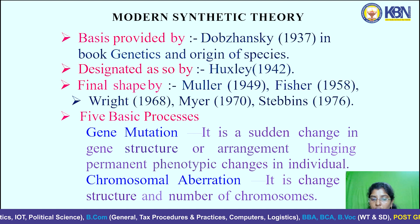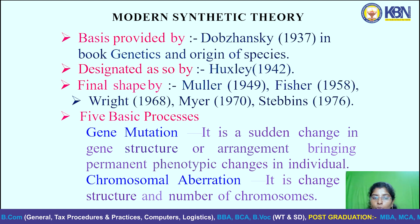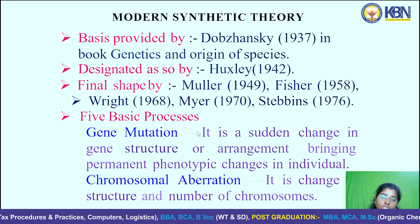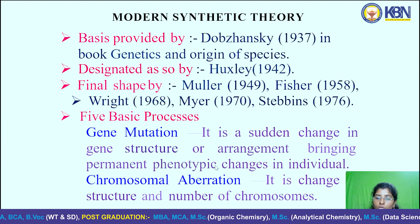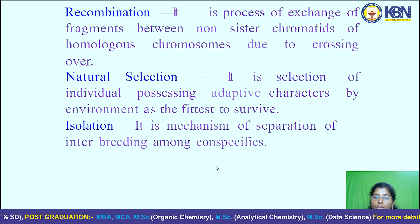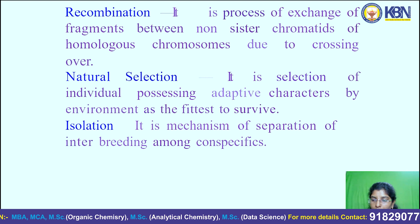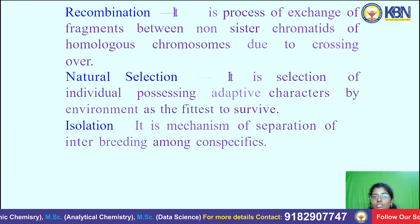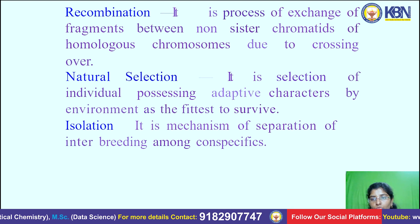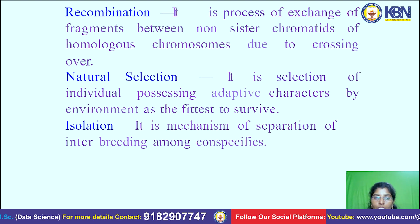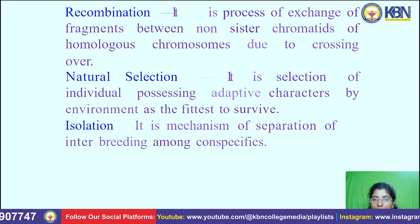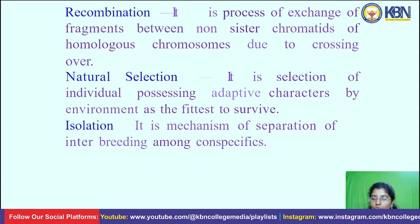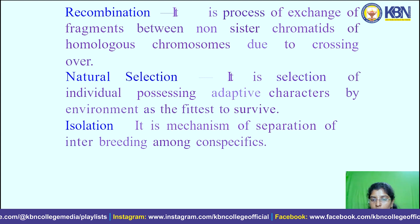Chromosomal aberration is a change in structure and number of chromosomes — unlike gene mutation, where only the structure or arrangement changes, in chromosomal aberration the number of chromosomes also changes. Recombination is a process of exchange in which DNA fragments are exchanged between non-sister chromatids of homologous chromosomes due to crossing over. Natural selection is the selection of individuals possessing adaptive characters by the environment as the fittest to survive. Isolation is the mechanism of separation of interbreeding among conspecifics.